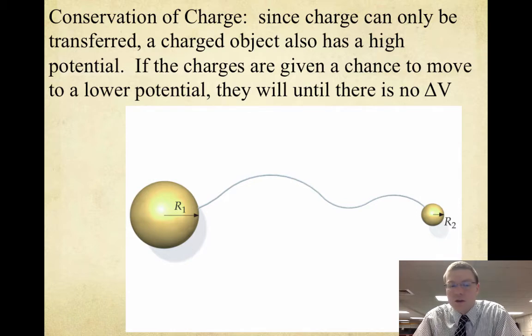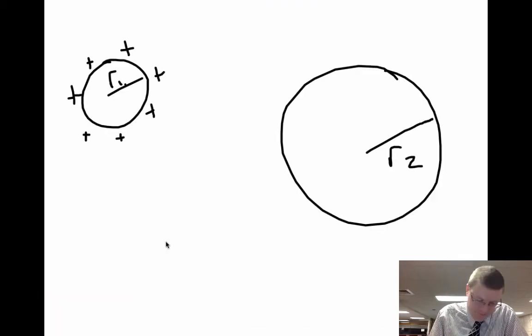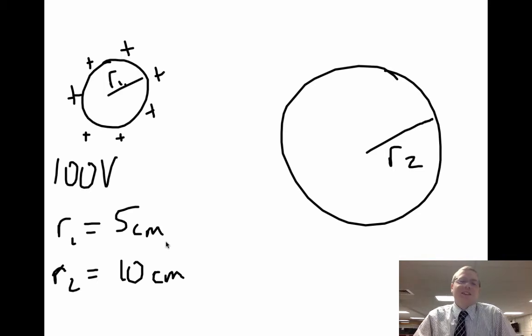So to show an example, let's try our own practice problem. So here's the setup, we've got a sphere, radius 1, that's charged to 100 volts, it's 5 centimeters in radius, and we've got R2, which is 10 centimeters in radius.